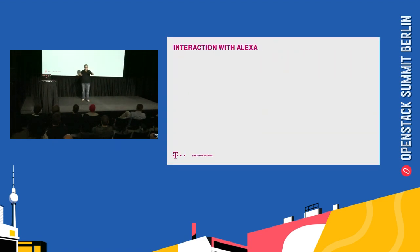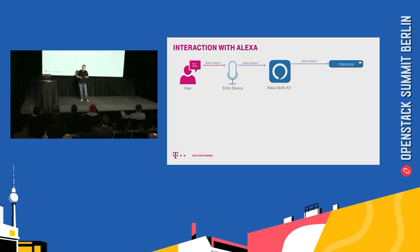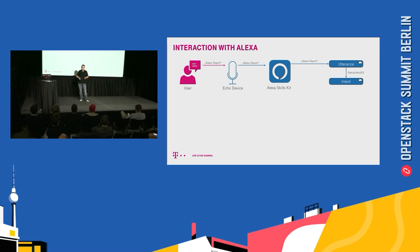To explain how all these things work together: we need a user, somebody who says something to an Echo device, which records it — for example, 'status report.' This goes to the Skill Kit and gets processed. The first thing to know is something called an utterance — something that you say. You define a string like 'status report' that is recognized by Amazon. That utterance, if noticed, gets translated to an intent. The intent is actually what gets called and triggers an action.